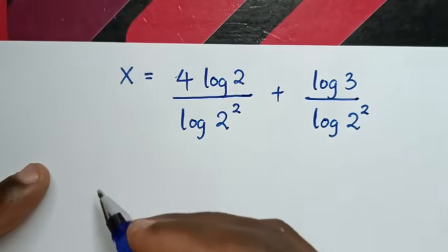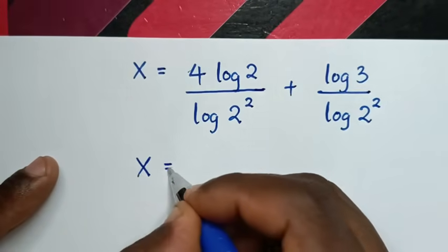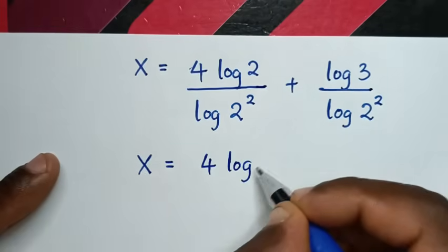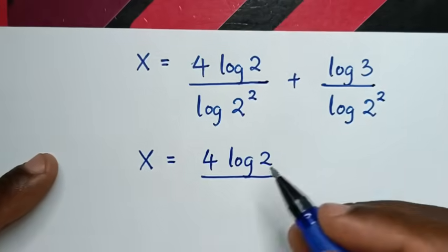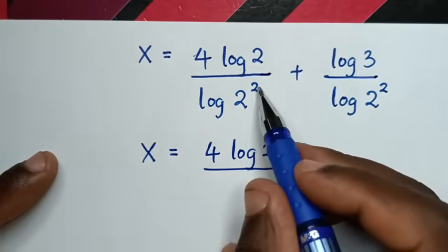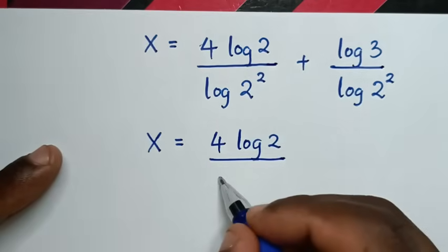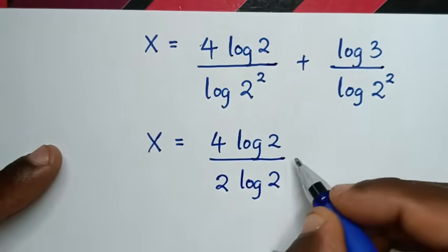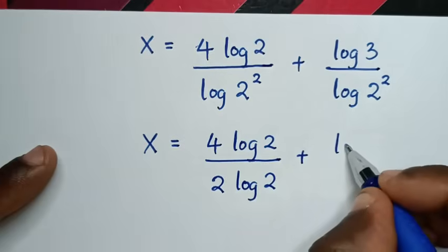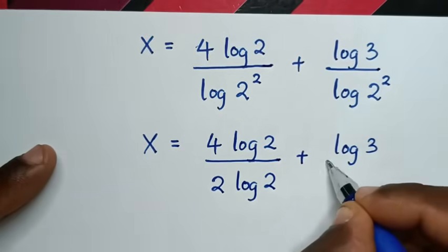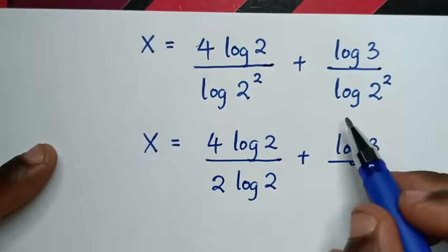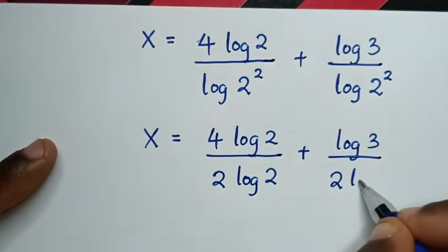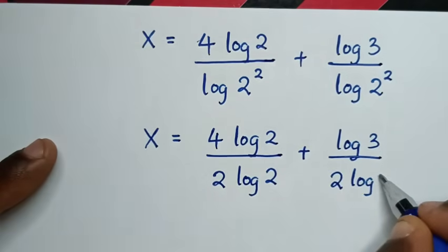Then x is equal to 4 log of 2 over log of 2 square. This square will move to the base, so it will be 2 log of 2. Plus log of 3 over log of 2 square — this 2 will move to the base — so it will be 2 log of 2.